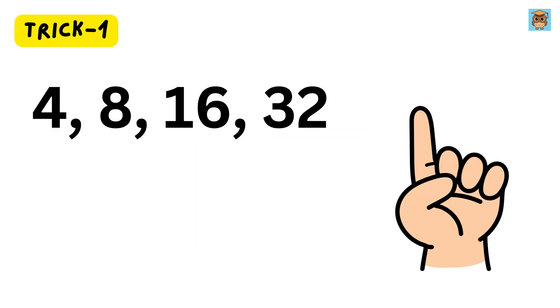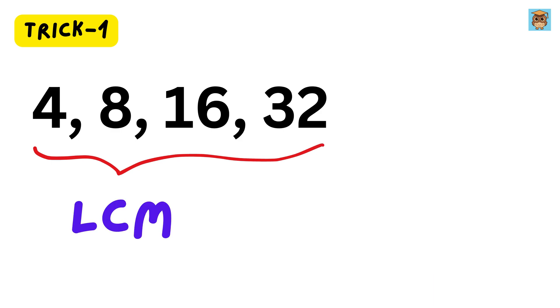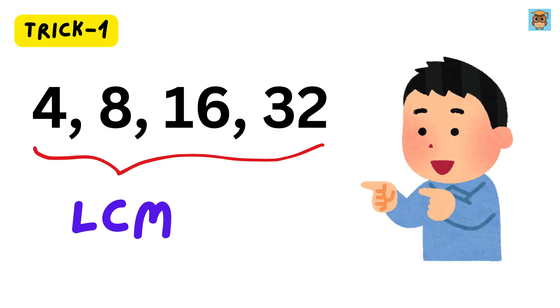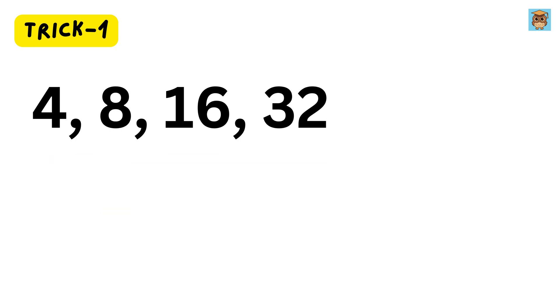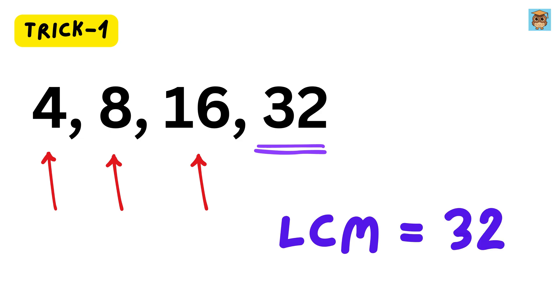Trick 1. Suppose we have the numbers 4, 8, 16, and 32, and we want to find their LCM. Whenever we are given a set of numbers where the largest number can be divided by all the smaller numbers, then the LCM is simply that largest number. In this case, 32 is the biggest number. We know that 32 is divisible by 4, 8, and 16, and therefore the LCM of these numbers is 32. That was really fast, isn't it?